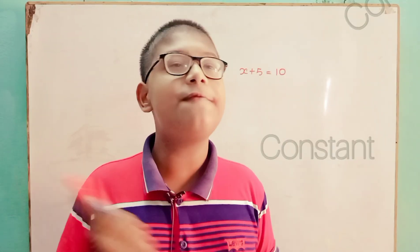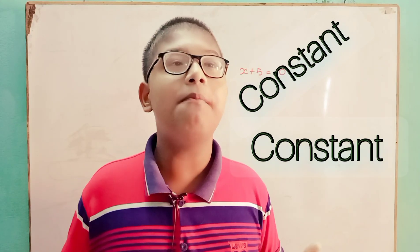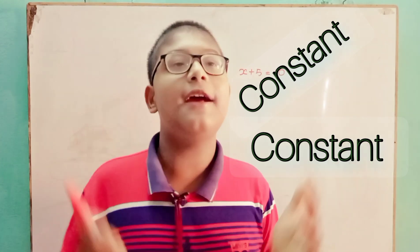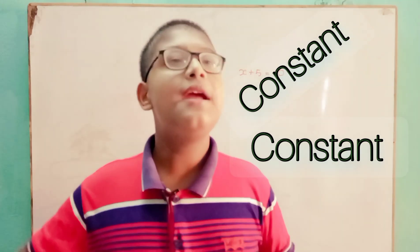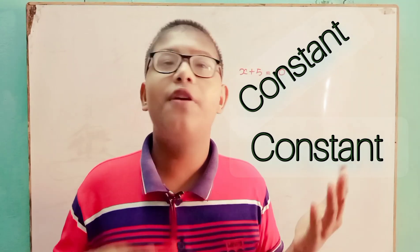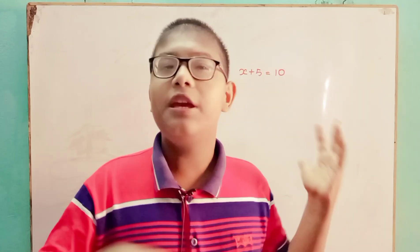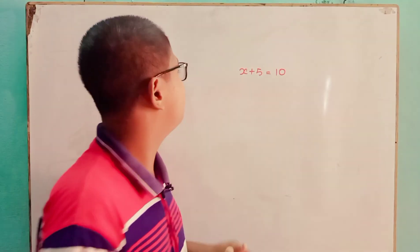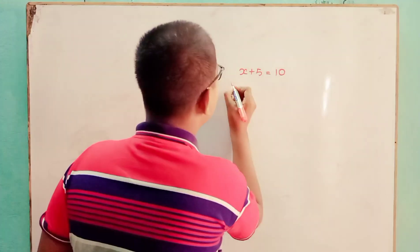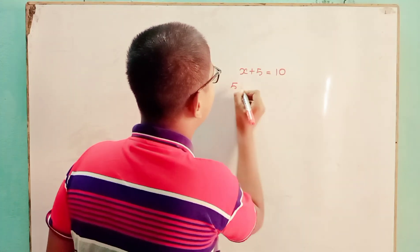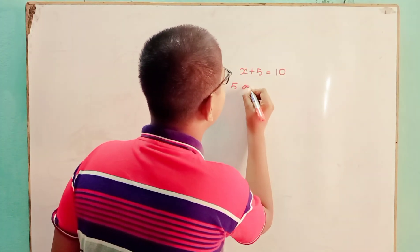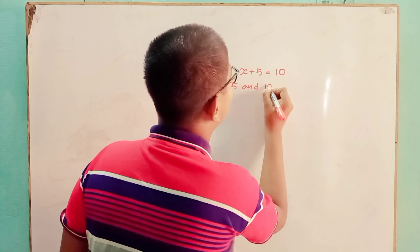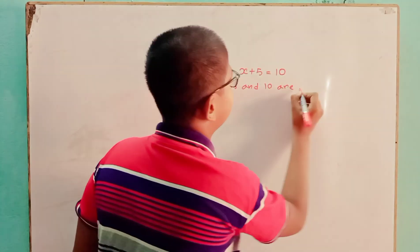On the other hand, a constant is a value or number that never changes in an expression — it's constantly the same. For example, in the figure given on the board, 5 and 10 are constants.